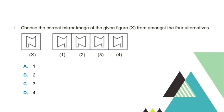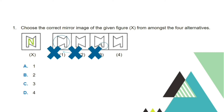Choose the correct mirror image of the given figure X from amongst the four alternatives. A mirror image is a copy of the same image, but reversed, just like when you use a mirror. The figure resembles a letter N. In letter A, it does not quite resemble a mirrored letter N, so it's wrong. Letter B is just a mirrored image of letter A, so also wrong. Letter C has a zigzag that is not found in the original figure, so wrong. In letter D, the figure resembles a mirrored N and is identical to the original image only mirrored. So the final answer is letter D.